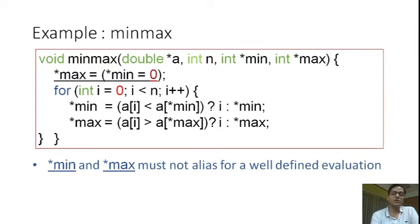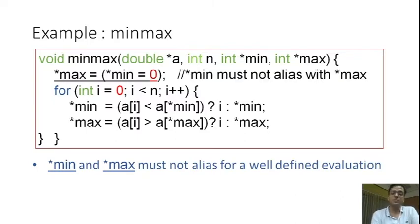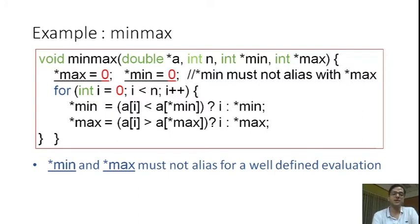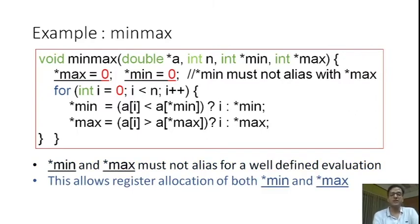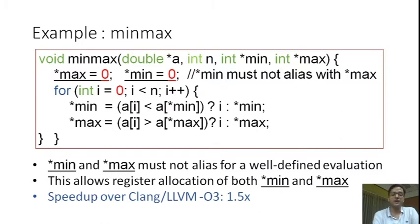From the original expression, we can infer that this expression would yield undefined behavior if star max and star min refer to the same memory object. Thus, star min and star max must not alias for this evaluation to be well-defined. If the compiler encodes and maintains this information, then even if it chooses a deterministic order, it retains enough information to reorder computation and do other things. In this particular case, the information that star min must not alias with star max allows the compiler to register-allocate both for the entire duration of the function body including the loop, resulting in a speedup of 1.5x over already optimized code. None of the current production compilers are able to realize this speedup.